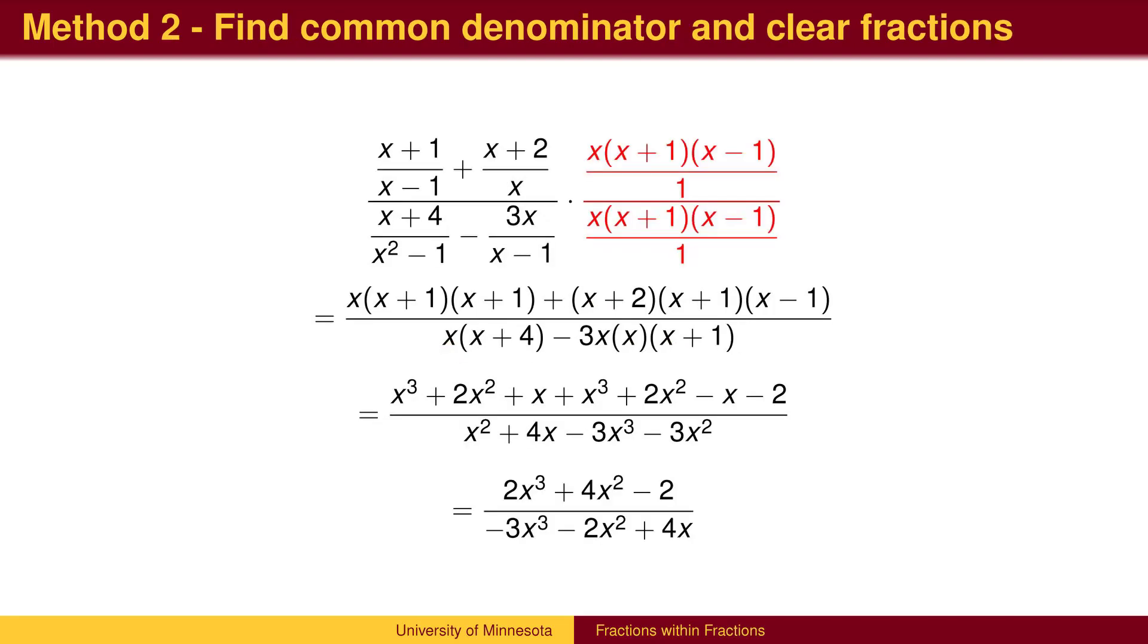A second approach is to find a common denominator across all four of the small fractions. We have denominators of x minus 1, x, and another factor of x plus 1 will appear in the difference of squares factoring of x squared minus 1.